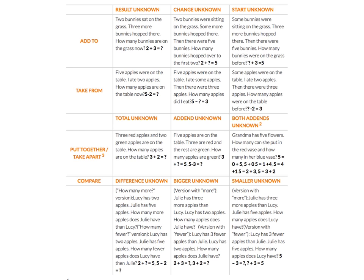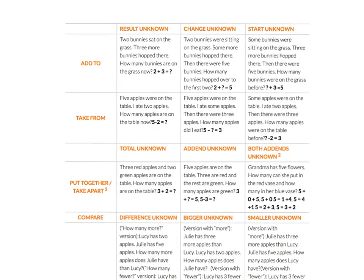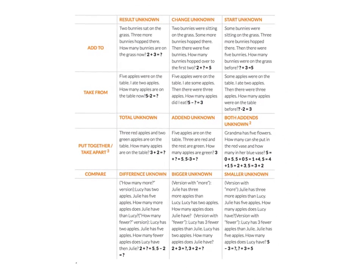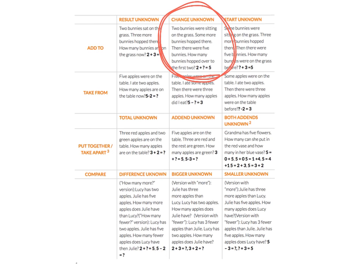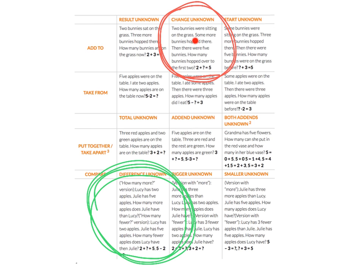So what do I mean? Taken from the Common Core website — if you Google Common Core math, you'll find it — this is Table 1 in the glossary of our standards. It shows all the different kinds of addition and subtraction questions. They're not all the same. There are 12 different kinds of addition and subtraction problems that we really need to expose our students to. Addition and subtraction is far more complicated than just addition and subtraction. In this lesson, we're going to be focusing on change unknown — add to with change unknown — and comparing with the difference unknown.